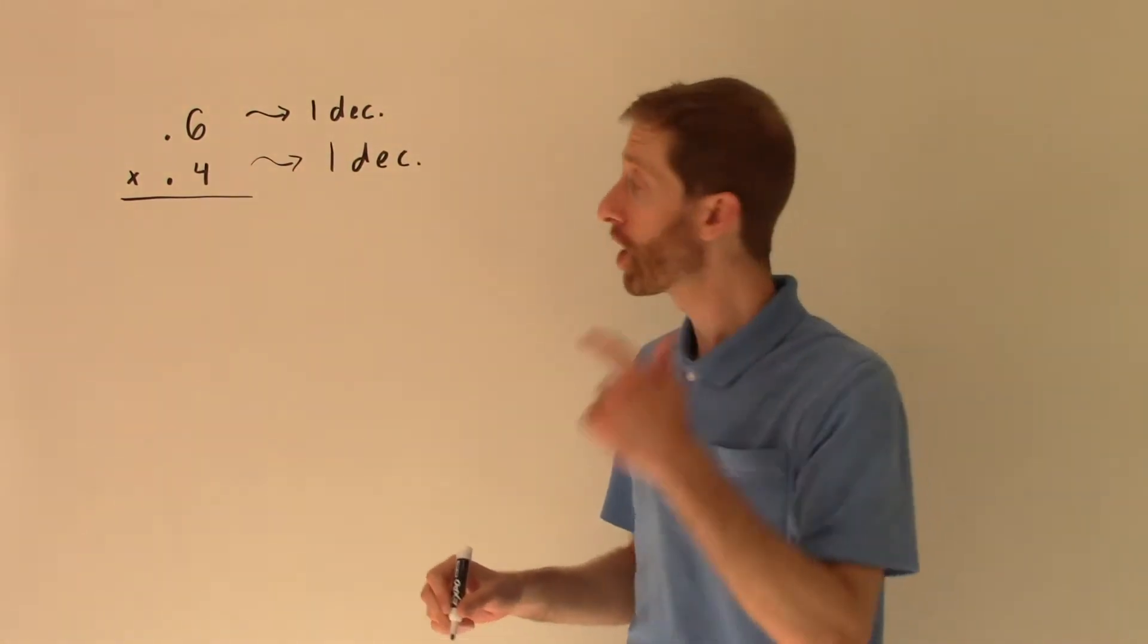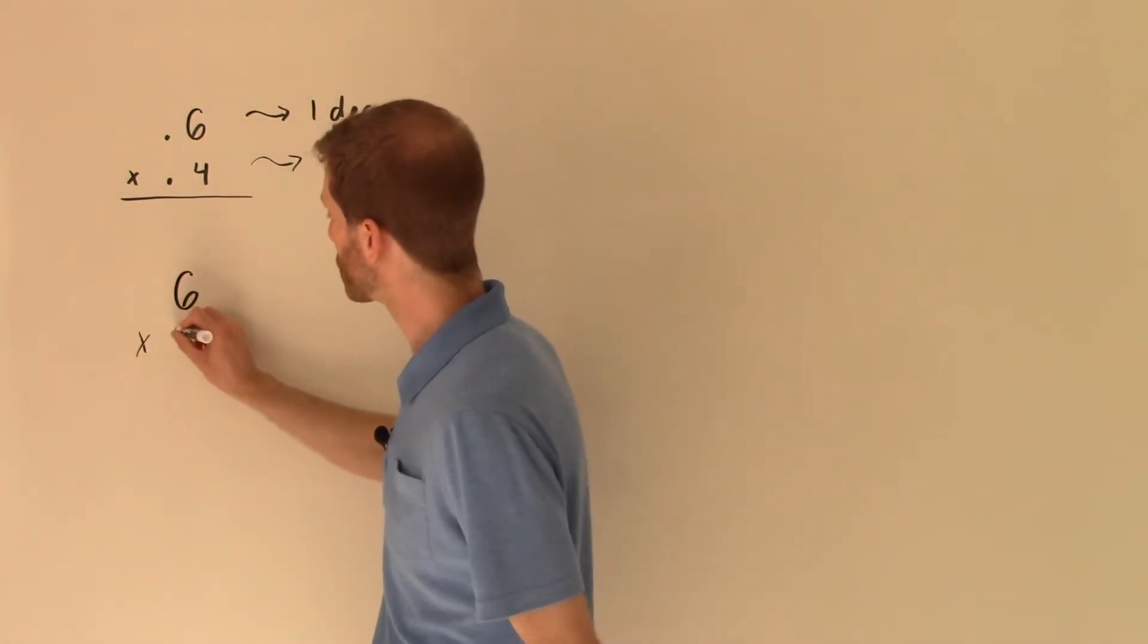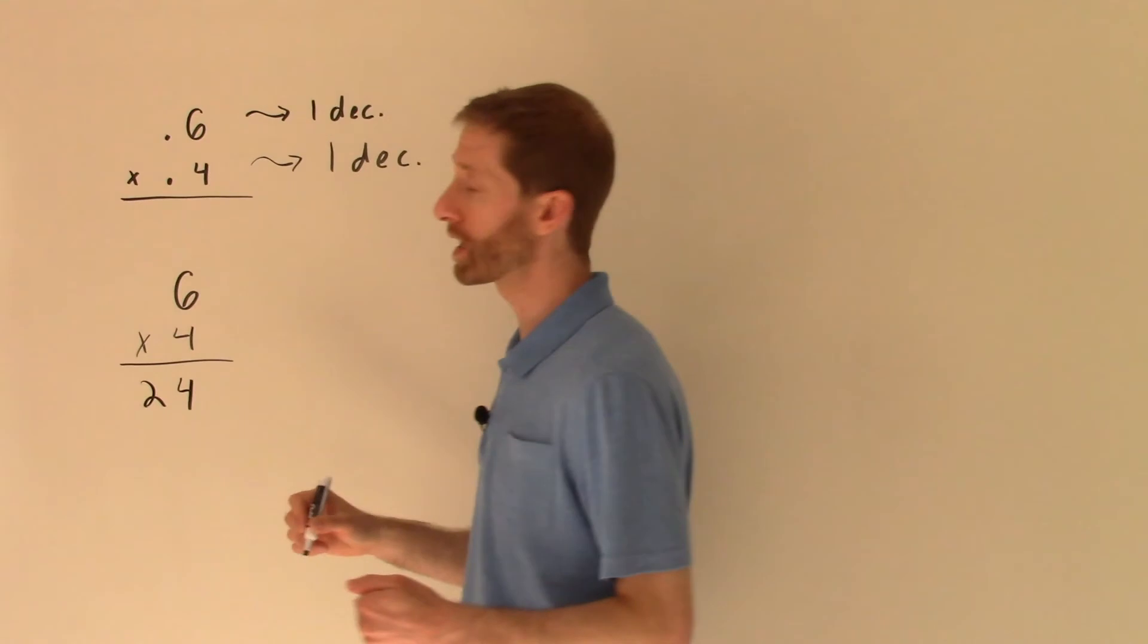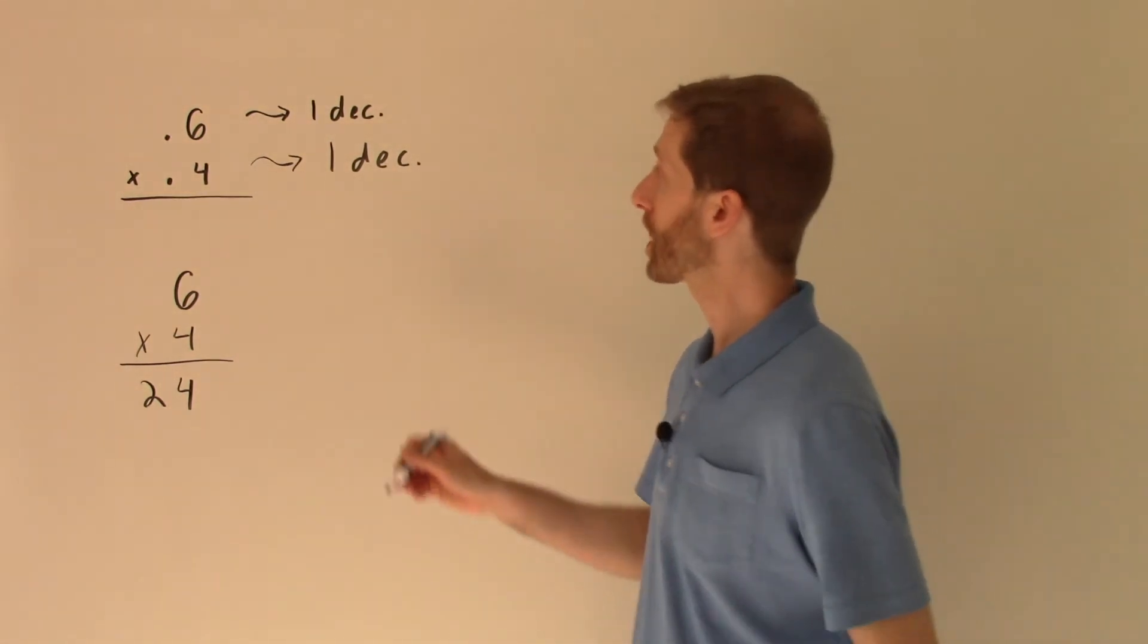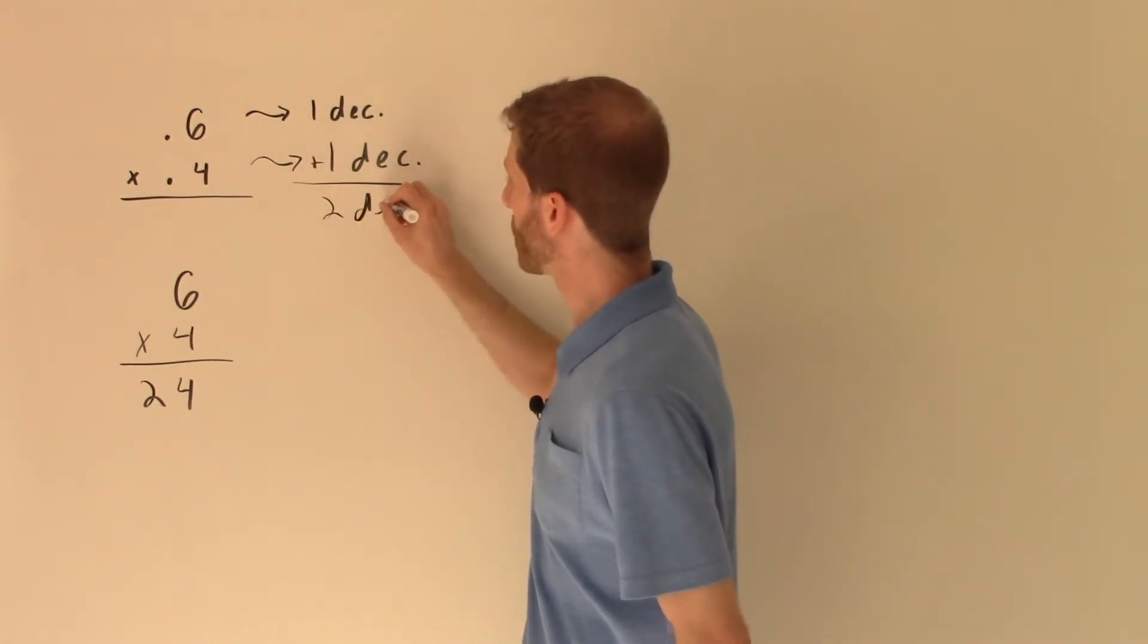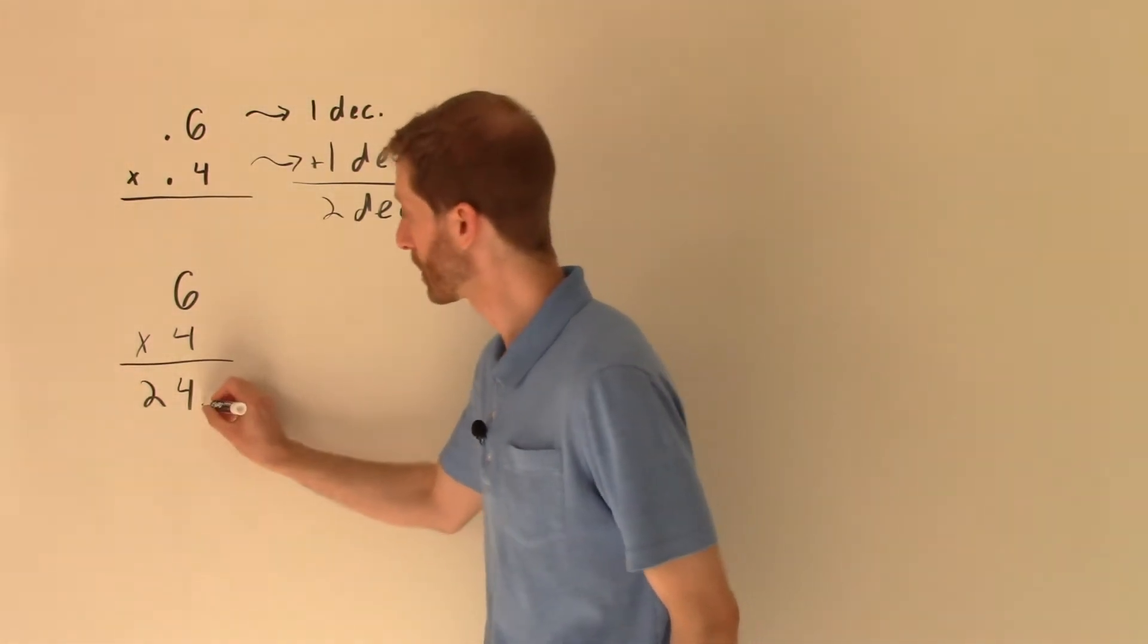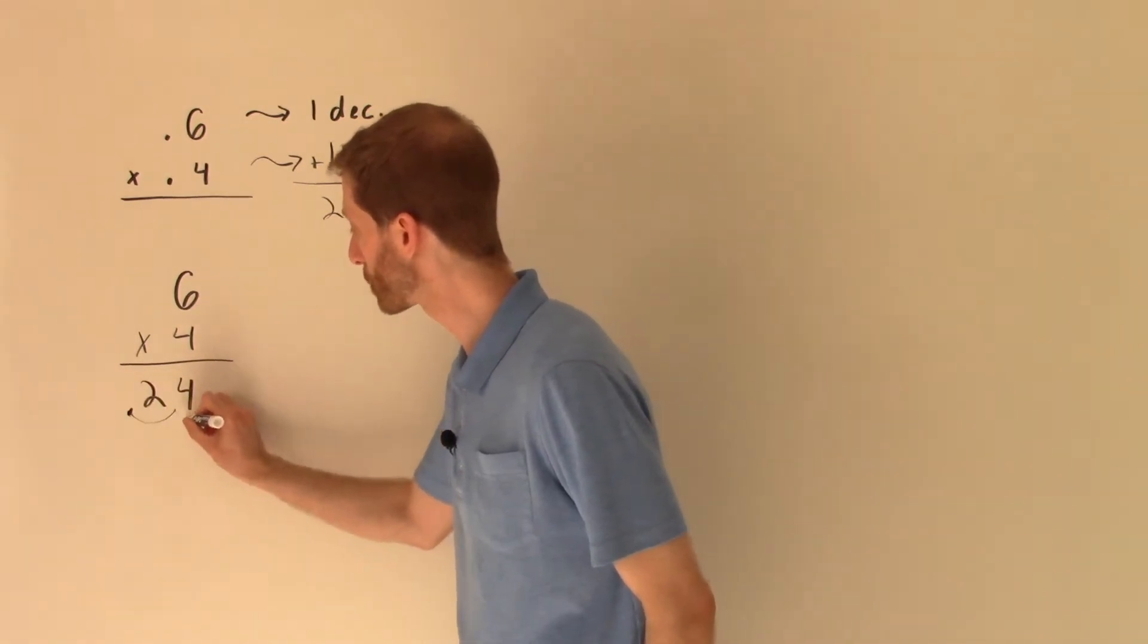So now in my head, what I'm actually doing is I'm doing this problem. I'm saying what's six times four. And six times four is 24. So I do the multiplication as if the decimal points are not there. Then I take into account the fact that there's a total of two decimal places. So that's how many decimal places we're going to slide the decimal back over to the left. So that's one, two decimal places like so, just like that.